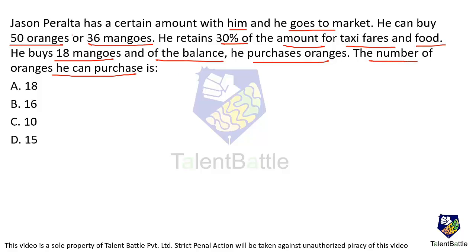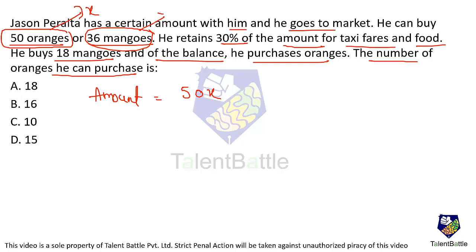He has some amount where he can buy 50 oranges or 36 mangoes. Let one orange cost X rupees, so the amount with him is 50X. Similarly, let one mango cost Y rupees, so the amount is also 36Y rupees. Both are equal since he can buy either 50 oranges or 36 mangoes, so 50X = 36Y.